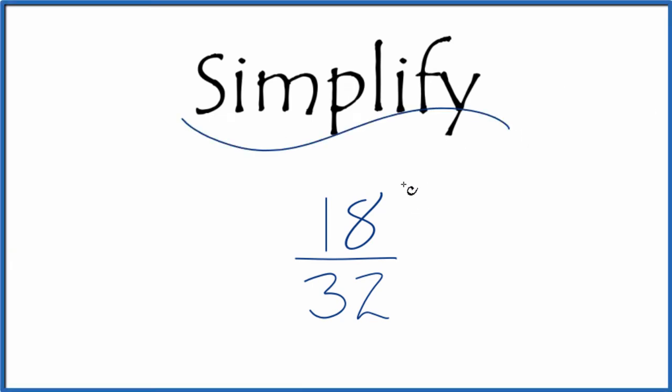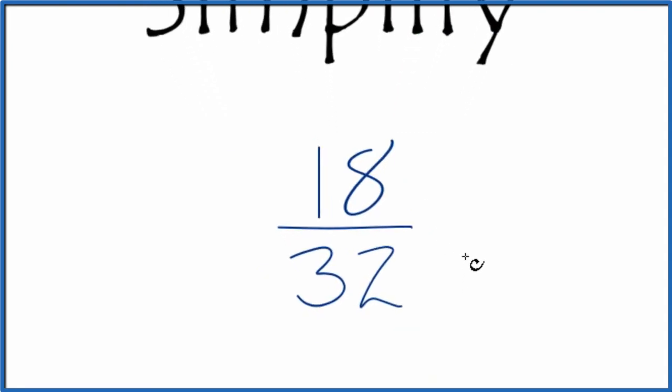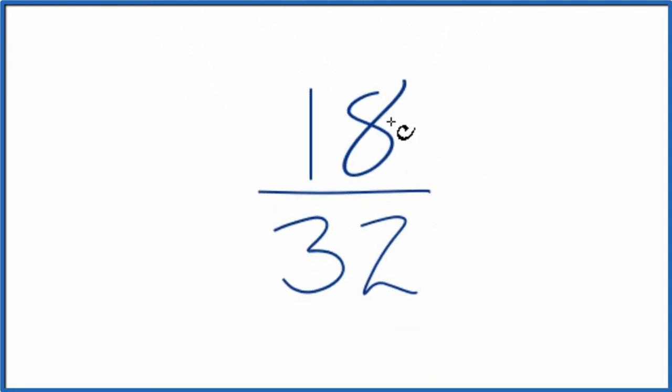If you need to simplify the fraction 18 32nds, here's how you do it. What we want to do is find another fraction that's equivalent to 18 over 32. It has the same value, we've just reduced it to lowest terms.